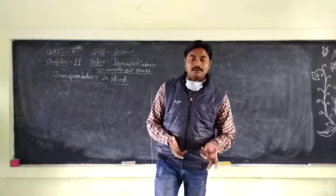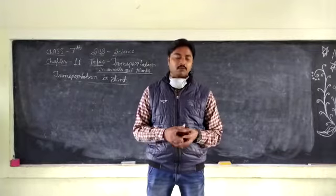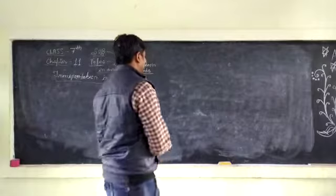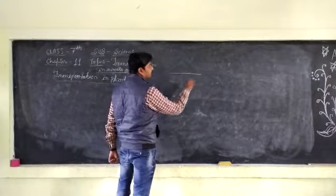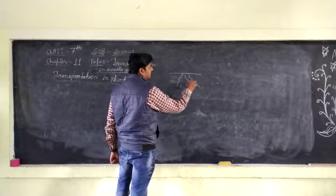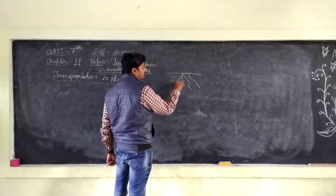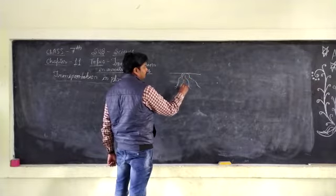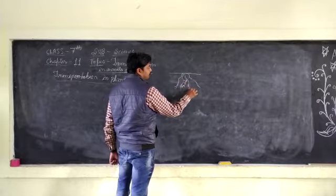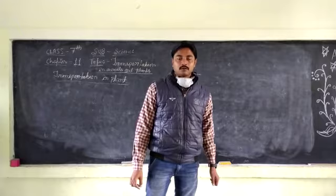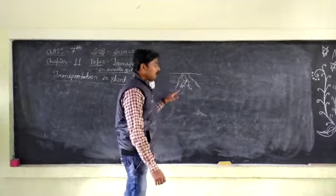Plants get minerals and water from the soil with the help of their roots. And we can see, in roots — suppose it is the surface of earth and these are the roots. In roots, there are small pores. These small and tiny pores help to absorb the water and minerals. They only absorb.